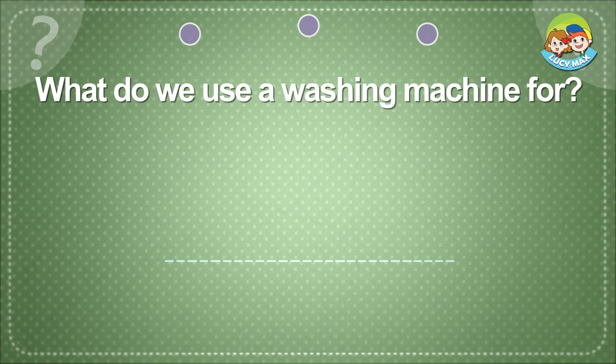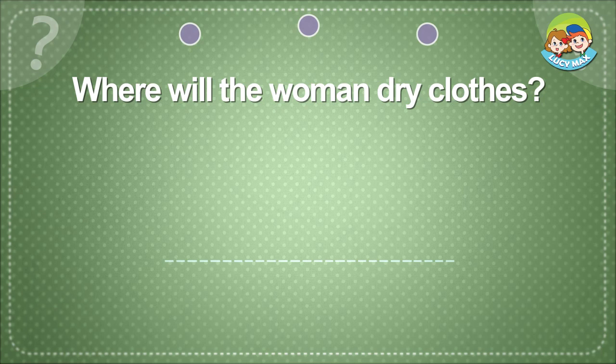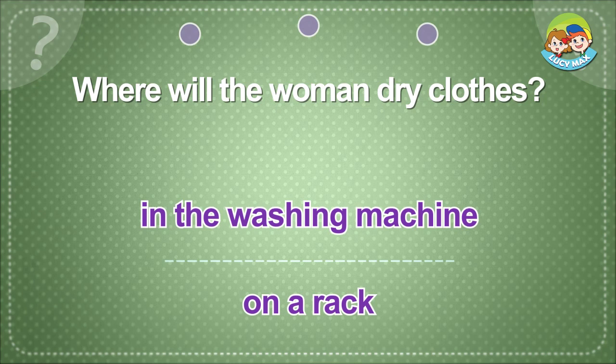What do we use a washing machine for? To wash clothes. Where will the woman dry clothes? On a rack.